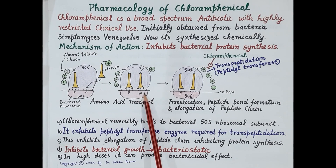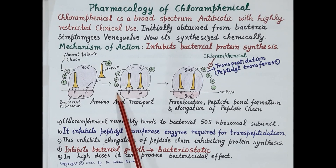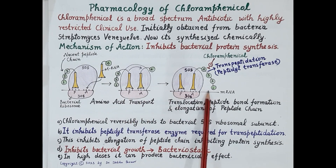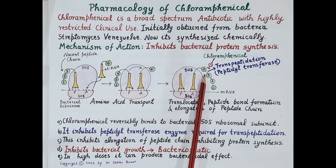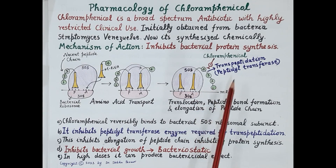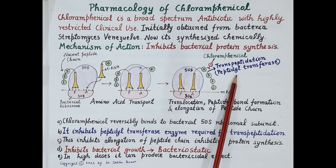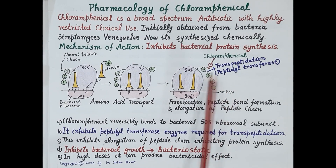For the synthesis of bacterial proteins, this peptide chain has to elongate by the addition of more amino acids. The nascent peptide chain is transported from the P site to the A site, and transpeptidation occurs — a peptide bond is formed between the newly attached amino acid and the nascent peptide chain. The enzyme peptidyl transferase is required for transpeptidation, and this is how the peptide chain keeps elongating and the required bacterial protein is synthesized.